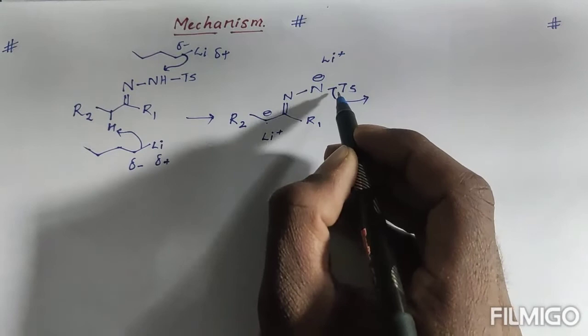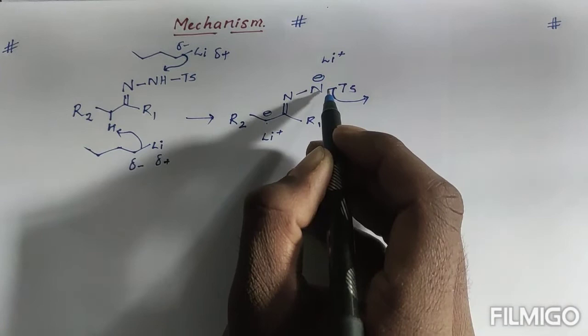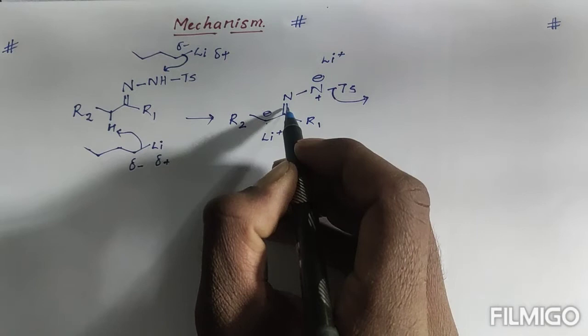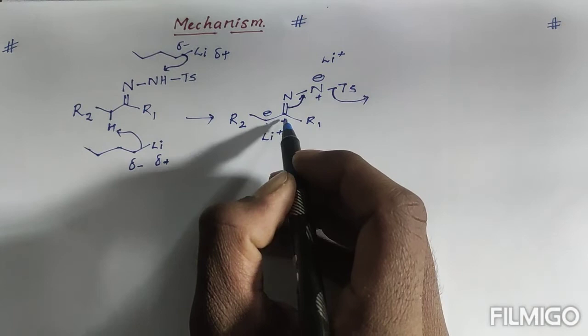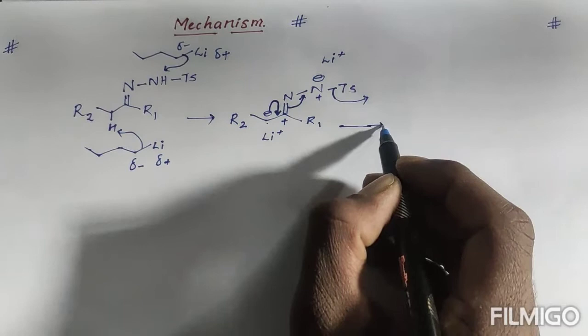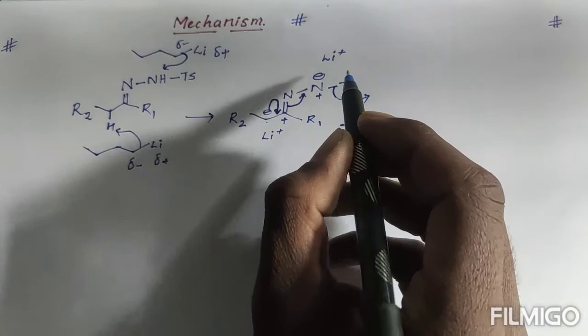Even though we had a negative charge on nitrogen, as the tosyl leaves with the sigma bond electrons, nitrogen gets a positive charge. To balance this, the pi bond electrons — which are free to bond with electron-deficient atoms — shift, giving a positive charge at carbon. The negative charge at the alpha carbon then participates in double bond formation, resulting in elimination of lithium tosylate.